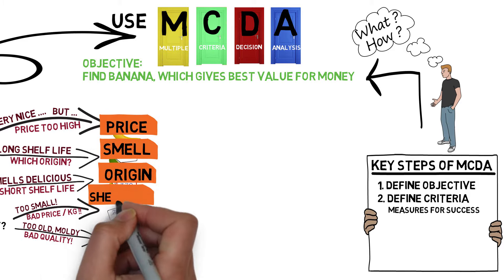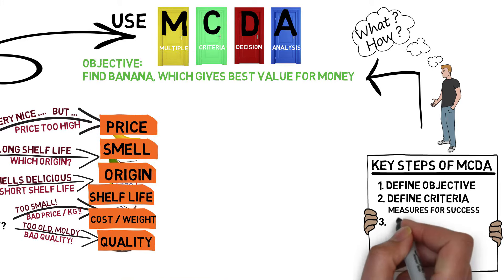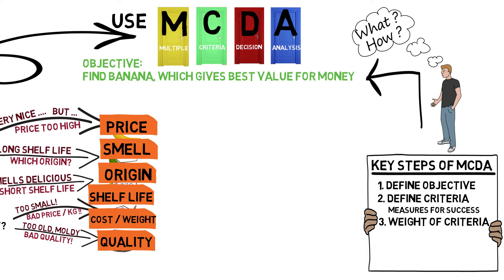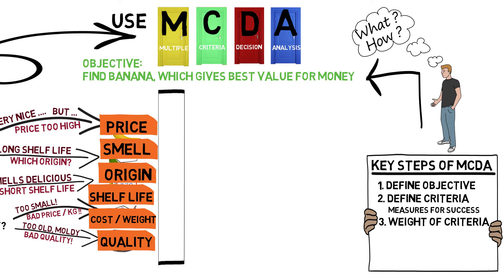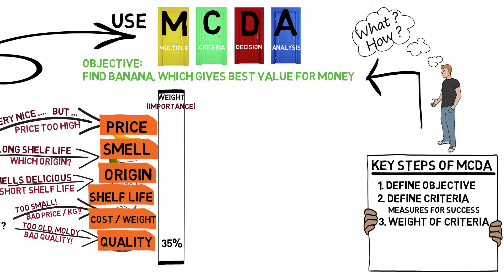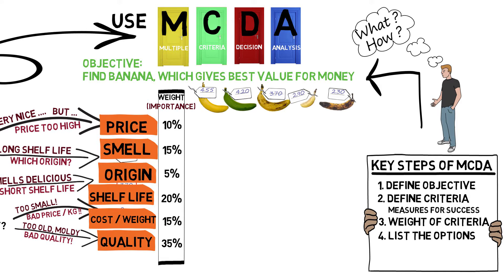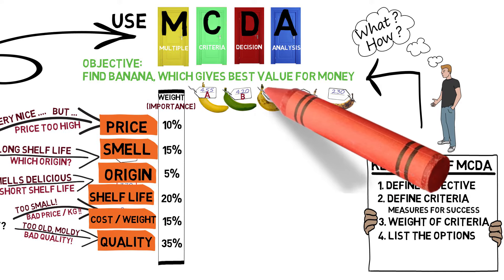Price is important to you, but there are others: smell, origin, durability, cost-effectiveness, and quality. Next, you need to consider how important each of the criteria is to you. Quality could be the most important and influence 35% of your decision. Shelf life is also important to you. Price per kilogram, price, and smell are all somewhat important, and where they come from or how they were grown.